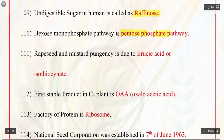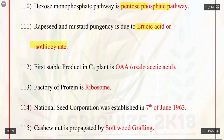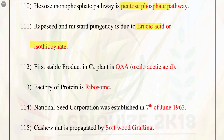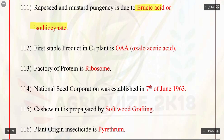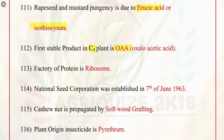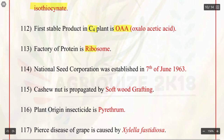Q111. Rapeseed and mustard pungency is due to erucic acid or isothiocyanate. Q112. First stable product in C4 plant is OAA, i.e. oxaloacetic acid. Q113. Factory of protein is ribosome.